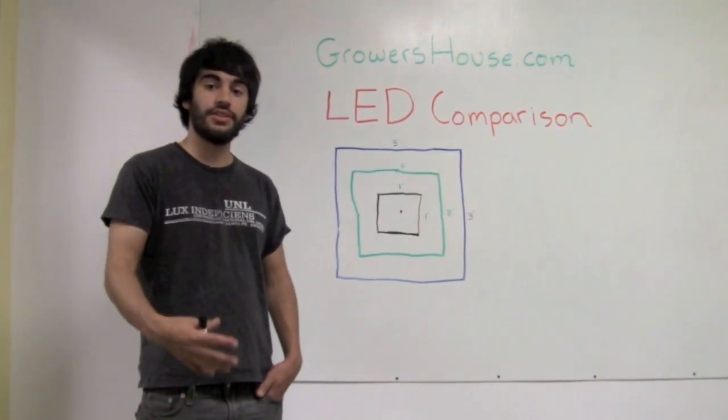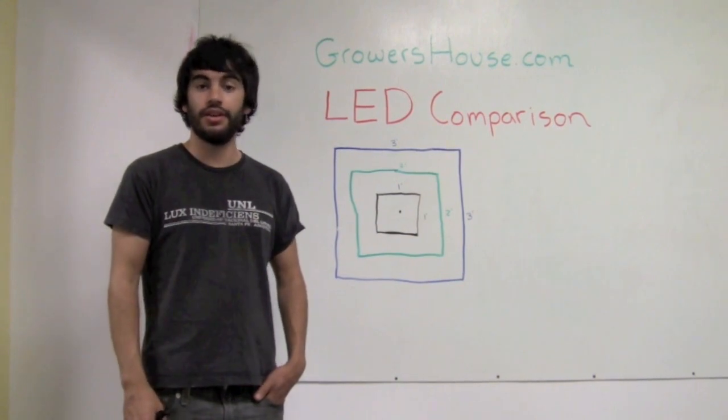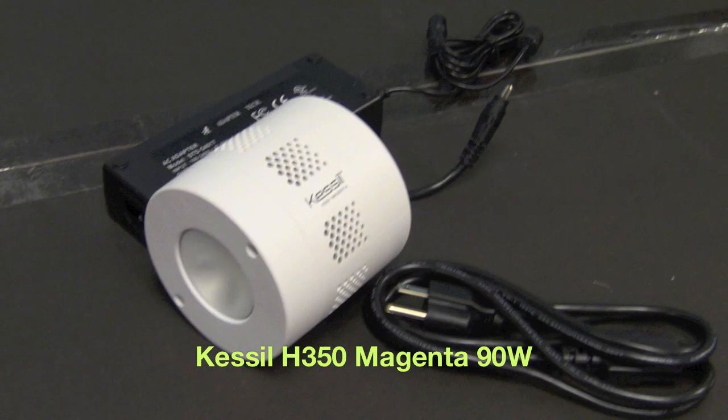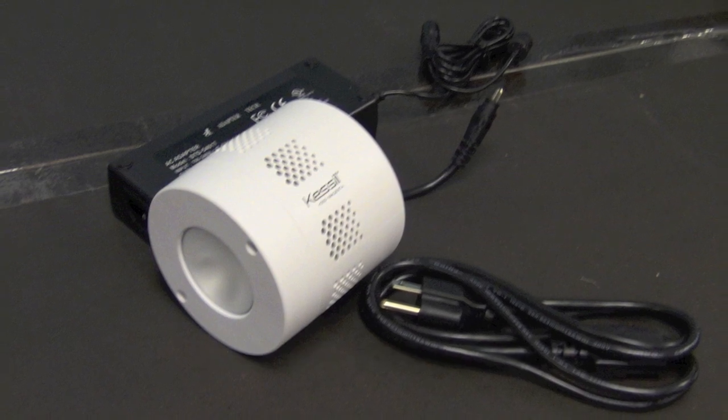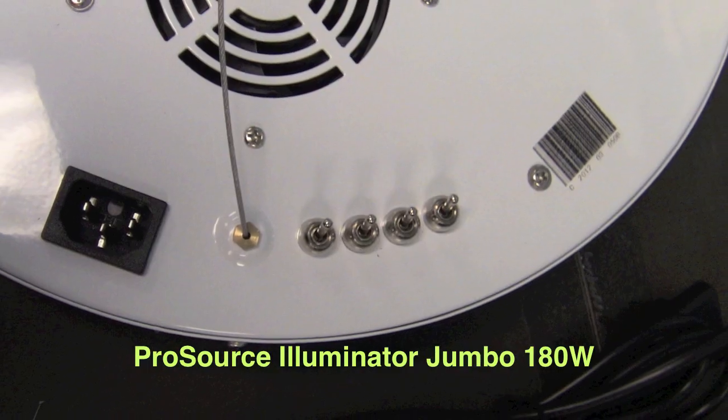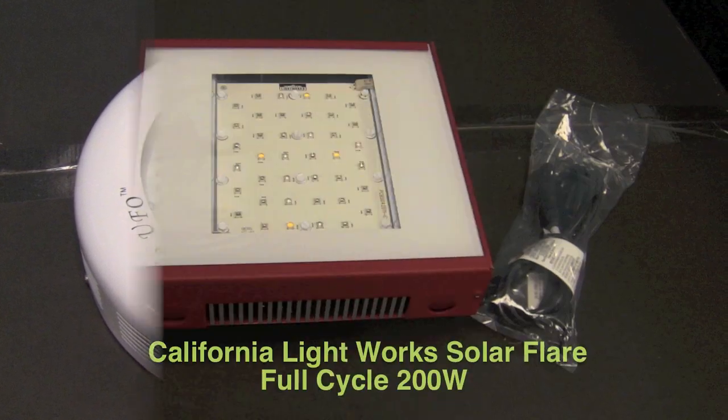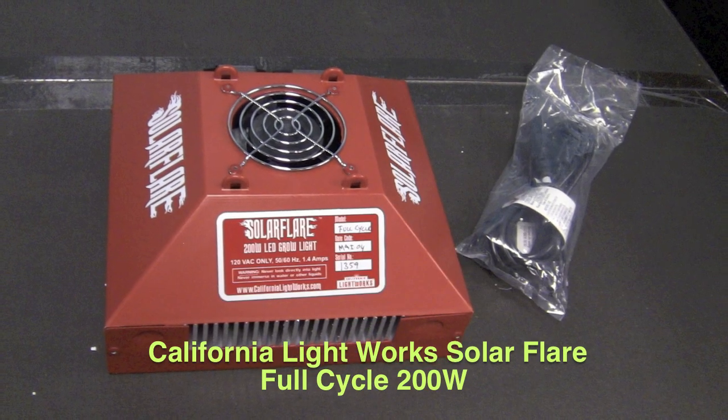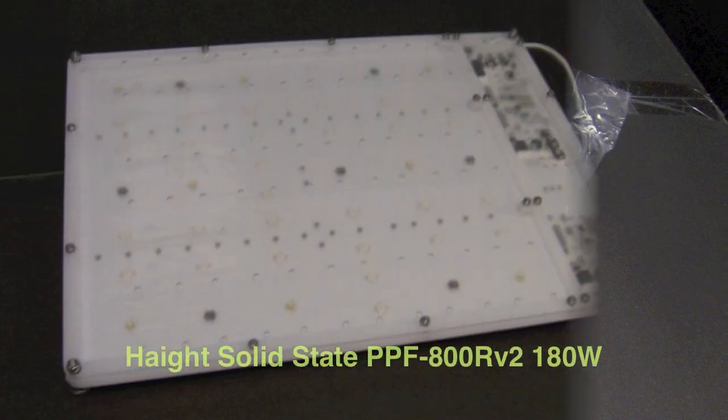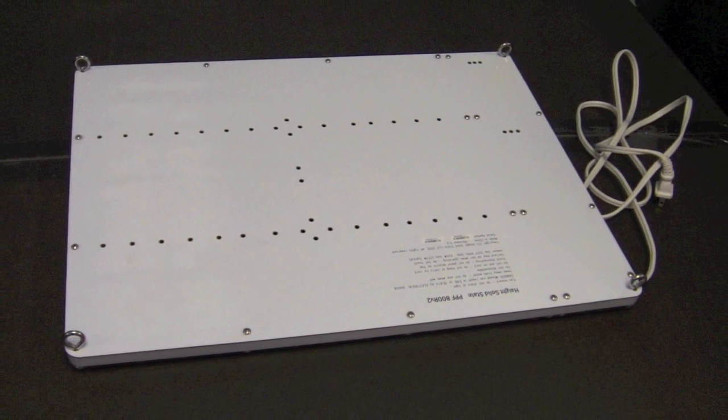We ran a comparison test on some of the most popular LED units in the hydroponics industry including the Kessel H350 90 watt unit, the ProSource Jumbo Illuminator 180 watt unit, the California Lightworks Solar Flare 200 watt full cycle unit, and finally the Hayes Solid State PPF800 RV2.